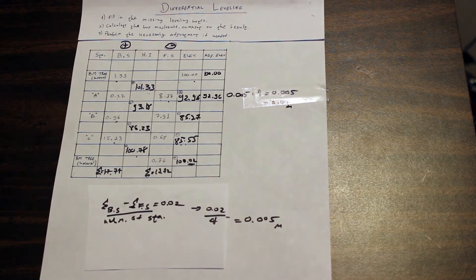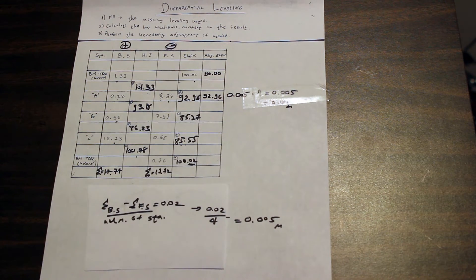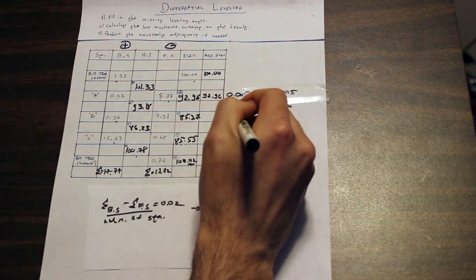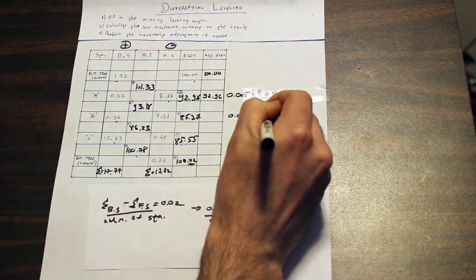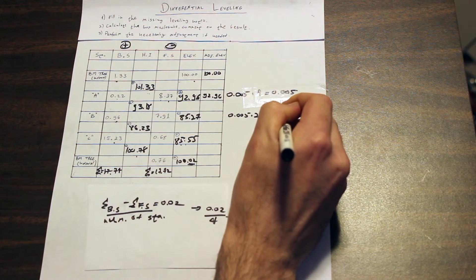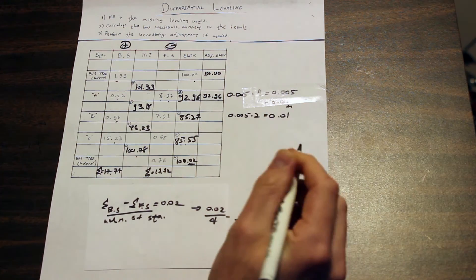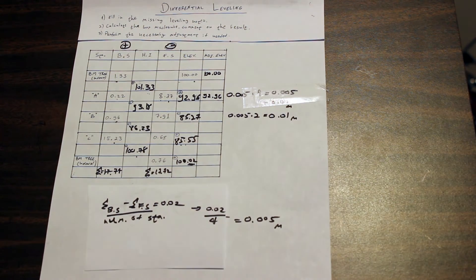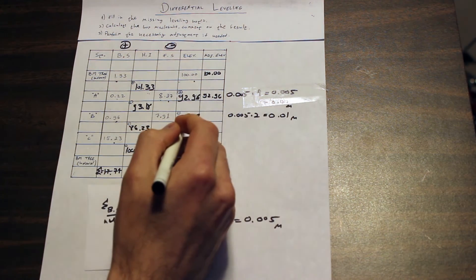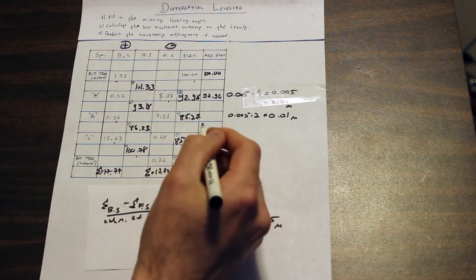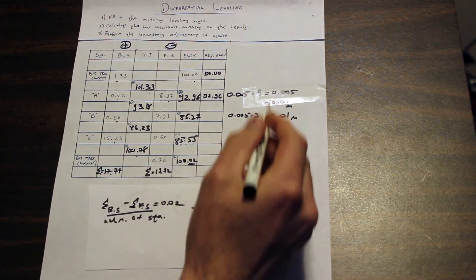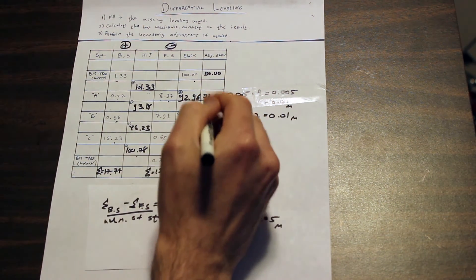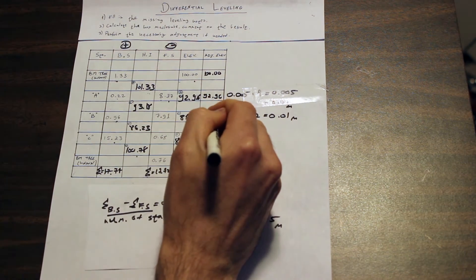But at the third elevation, it's 0.005 times 2. This time we are getting 0.01 meters, which we need to deduct from the elevation. Why do we need to deduct? Because we went over, and that's how we know if we need to deduct or add. So in this case we need to deduct, so the adjusted elevation would be 85.26.